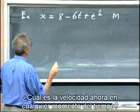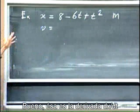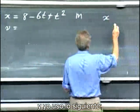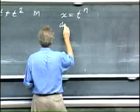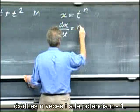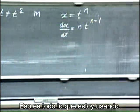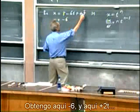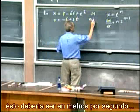What now is the velocity at any moment in time? That's the derivative dx/dt. I use the following: if x equals t to the power n, then dx/dt is n times t to the power n minus 1. That's all I'm using. So the derivative of 8 is 0, I get minus 6 here, and plus 2t here. This would be in meters per second.